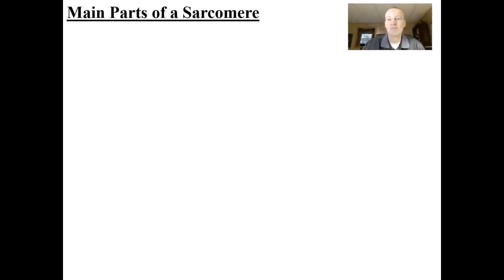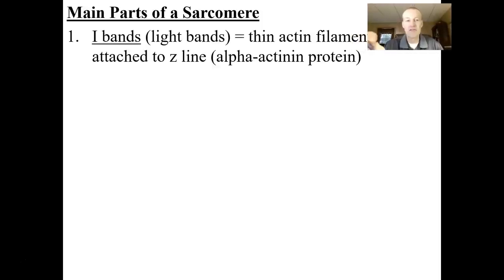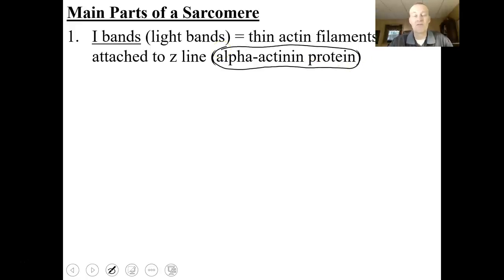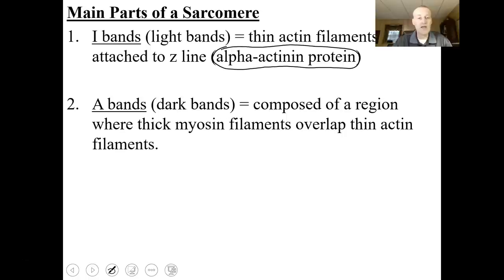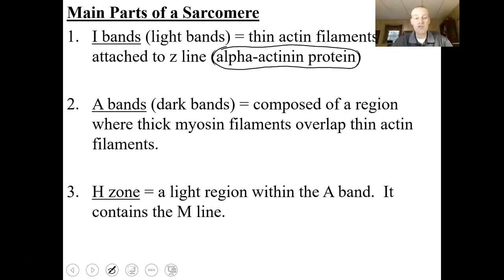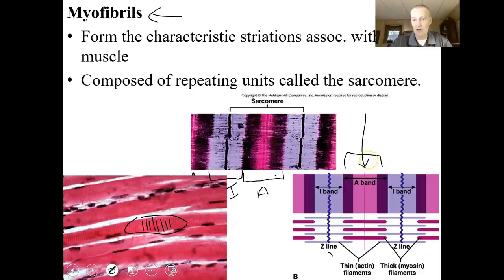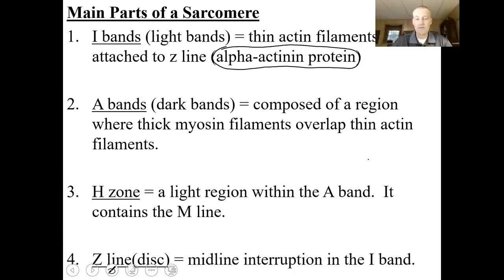The main parts of a sarcomere: the I-bands are the light bands containing thin actin filaments, attached to the Z-line through the structural protein alpha-actinin. The A-bands are composed of the region where the thick filament myosin and thin filament actin can overlap — it's a darker band. The H-zone is a light region within the A-band that contains the M-line. The Z-line, or Z-disc, is the midline interruption in the I-band — a protein that connects to the thin filaments.